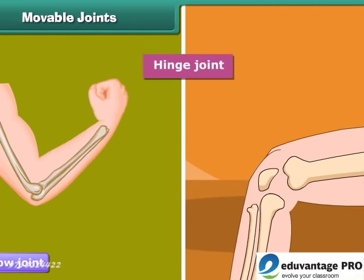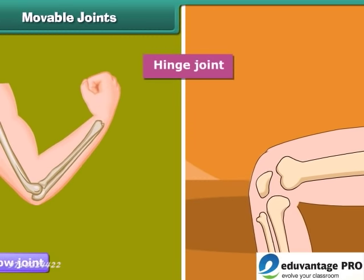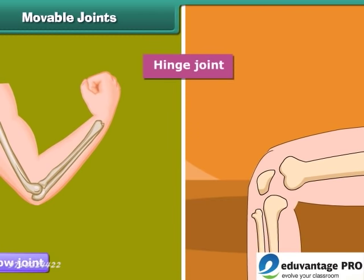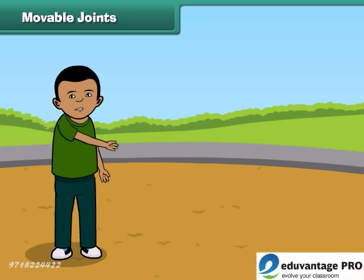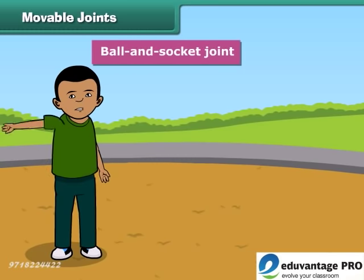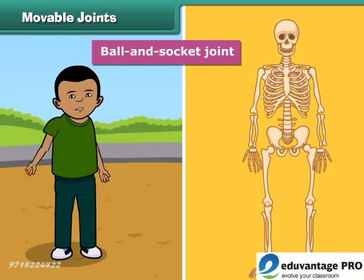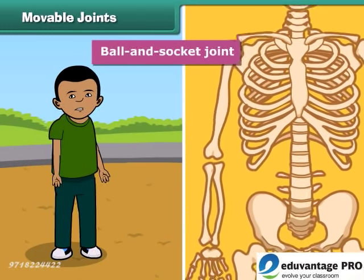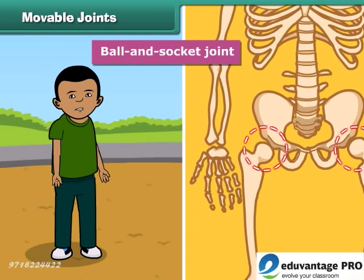Hinge joint: these are the joints which can be bent in only one direction. For example, the elbow joint and knee joint. The joints which join the bones to make circular movement possible are called ball and socket joints. For example, the bone in the upper arm is fitted to the bone in the shoulder by a ball and socket joint. Similarly, the thigh bone is fitted to the hip bone by a ball and socket joint.